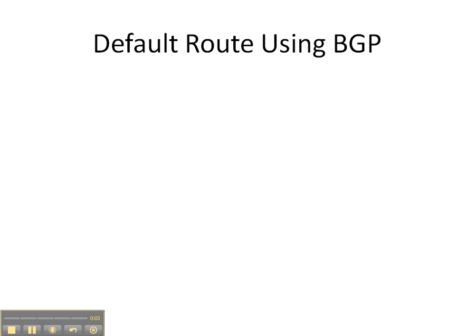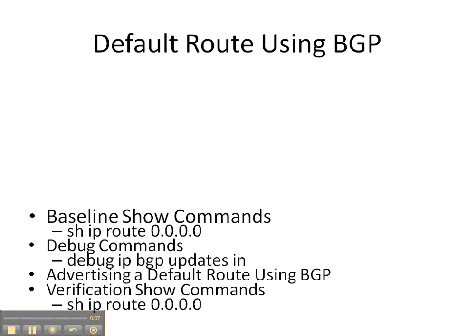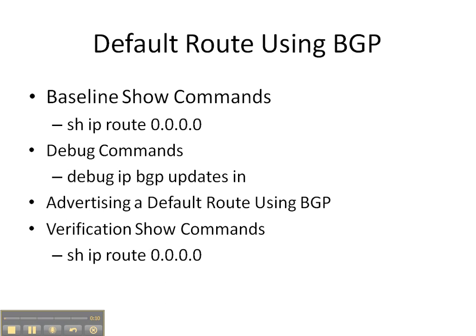In this video cheat sheet we're going to be propagating a default route using BGP. We're going to do a baseline show command on router 5 of 'show IP route 0.0.0.0' to see if there's a default route already in our forwarding table. We're going to do a 'debug IP BGP updates in' on router 5 to get its perspective of how things change. Then we're going to advertise a default route into BGP on router 6 and do a verification show command on router 5 to make sure the default route is now in our forwarding table.